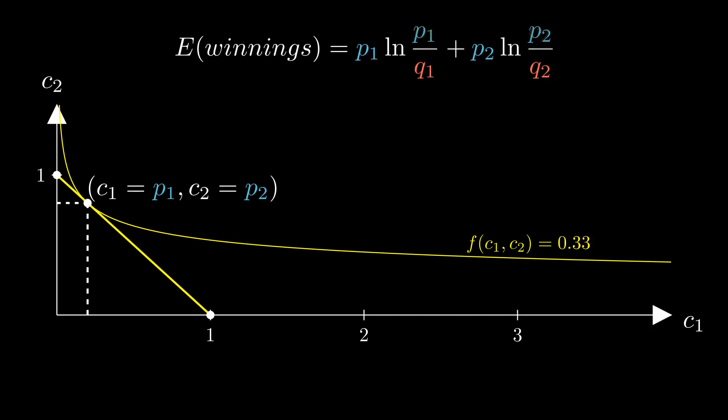Once we plug it into the original equation, the result is the expression for Kullback-Leibler divergence, with its value equal to the function f we were maximizing. This is how much we profit from the casino if it assumes incorrect outcome probabilities, and we know the correct probabilities.